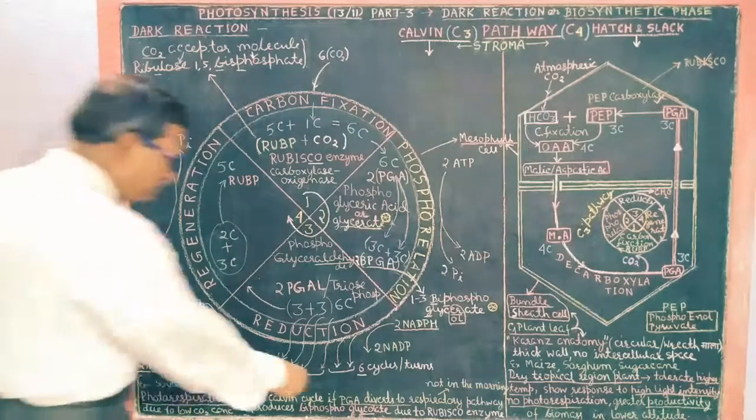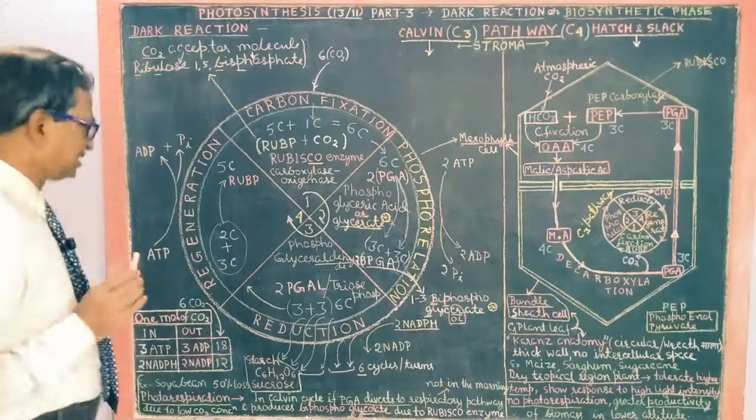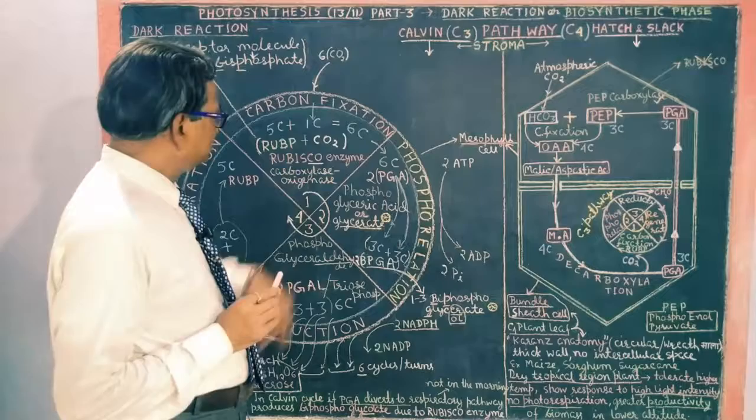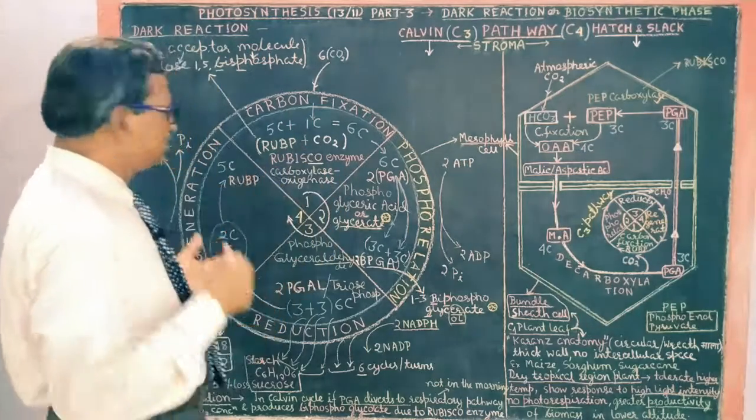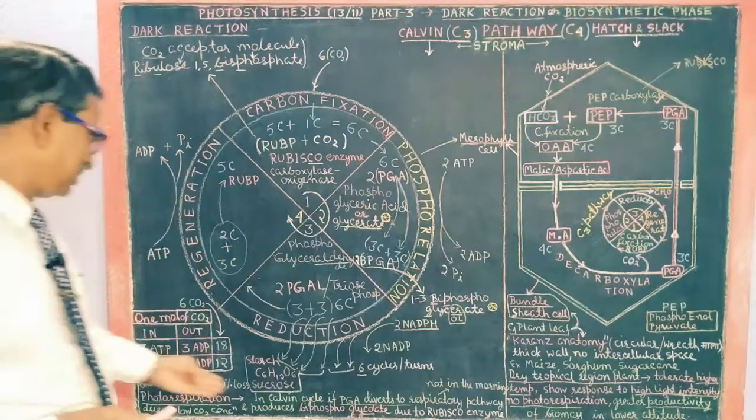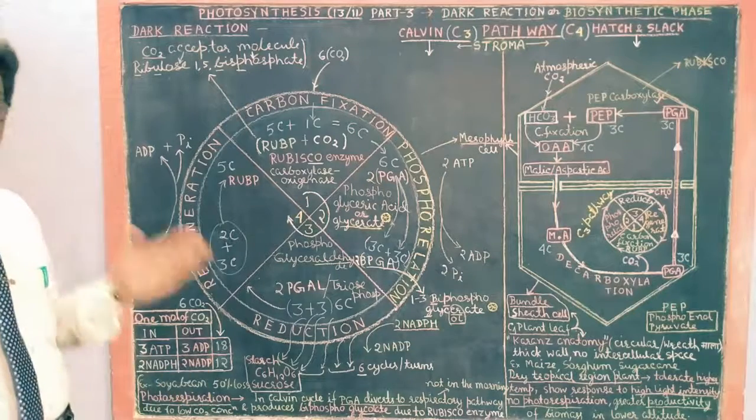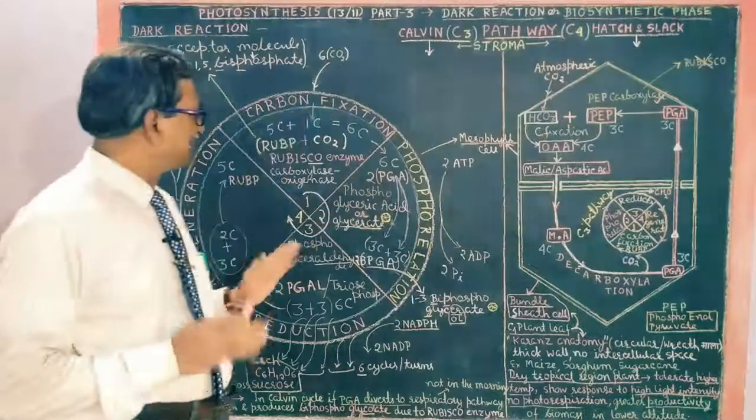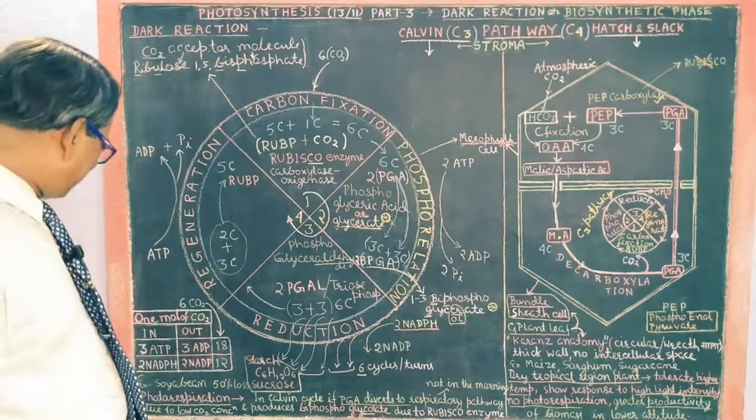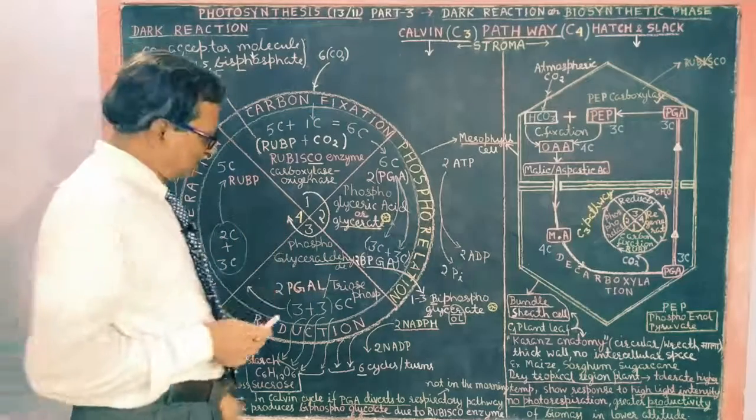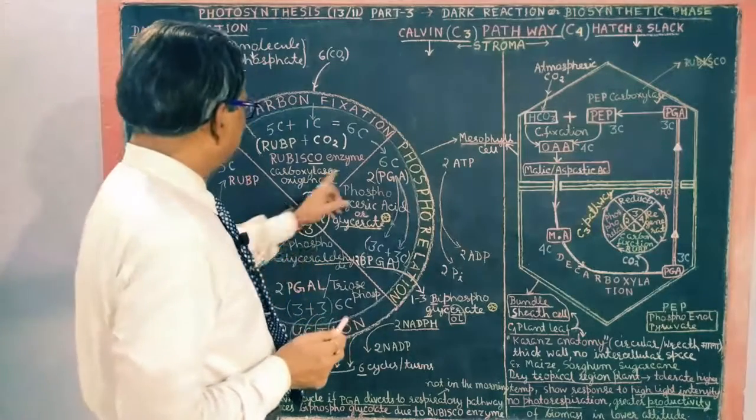Photorespiration in Calvin cycle: PGA diverts to respiratory pathway due to low CO2 concentration. CO2 concentration is low and oxygen concentration increases. So this enzyme has affinity with oxygen and this causes respiration and wastage. So in the plant, 50% wastage can occur. The maximum photorespiration is found in soybean plant. So this is a wastage.